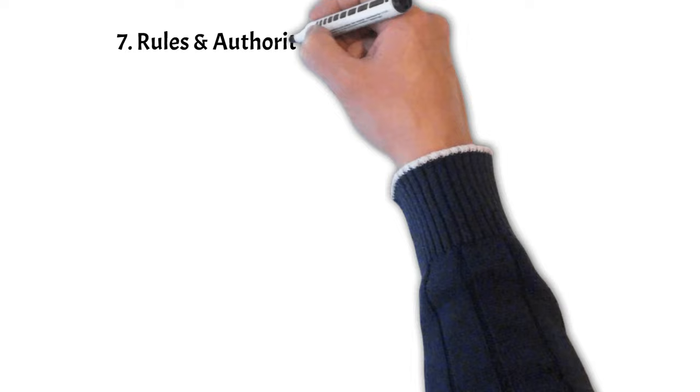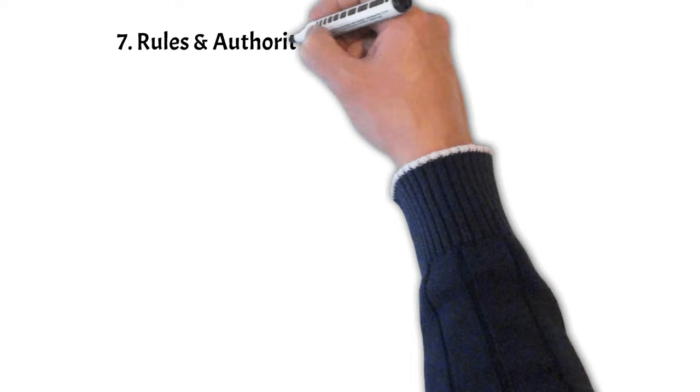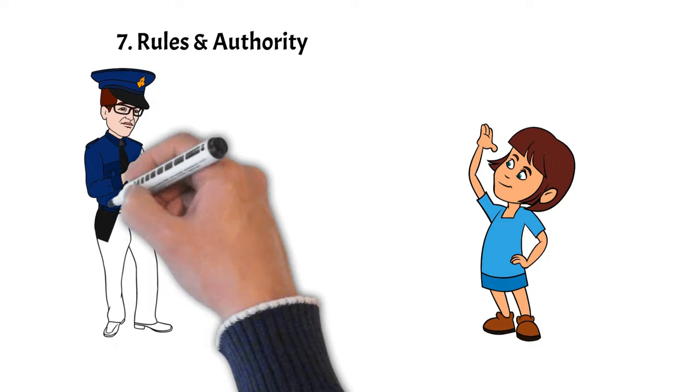Number 7: Overemphasis on Rules and Authorities. Their tendency to rely on external systems and authorities for guidance may clash with more rebellious or individualistic types.